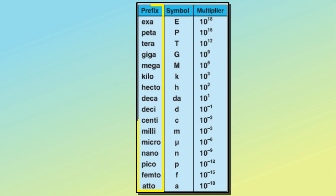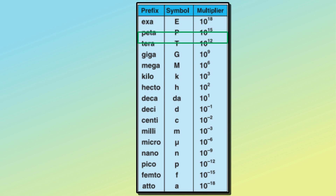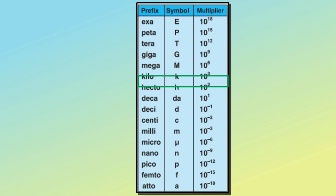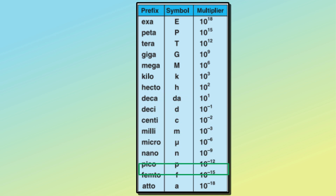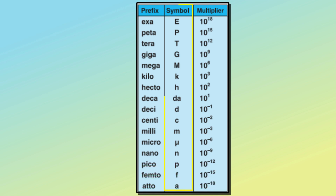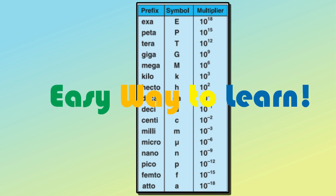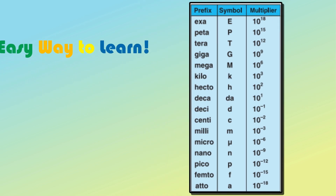On the left side, prefixes: exa, peta, tera, giga, mega, kilo, hecto, deca, deci, centi, milli, micro, nano, pico, femto, atto are mentioned. Symbols are on the middle, and the multiplier is on the right side.